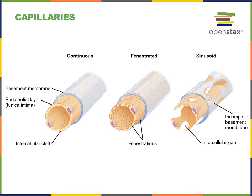Capillaries are the smallest blood vessels, which are specialized for the exchange of substances between the blood and the surrounding tissues. Fluid is able to flow from the blood through the capillary wall through the intercellular clefts of continuous capillaries, through the fenestration pores of fenestrated capillaries, as well as through the intercellular gaps of sinusoids.